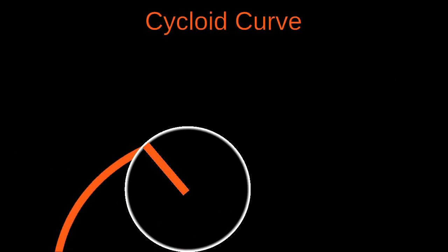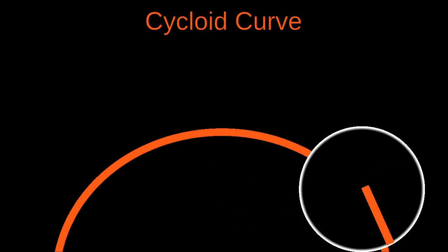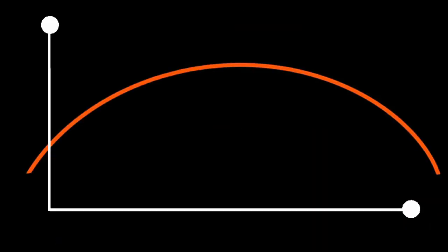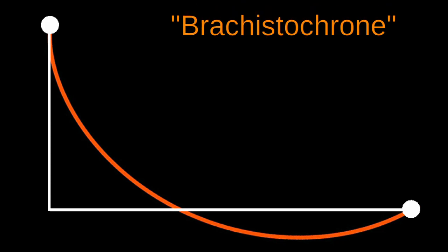The brachistochrone is a curve known as the cycloid. We can draw it by tracing the path of a point on the circumference of a circle as it rolls on a flat surface. It's worth noting that the flipped cycloid curve is the brachistochrone.